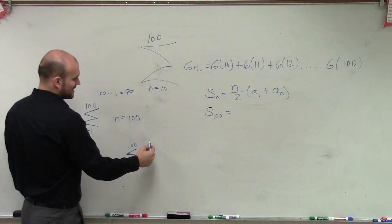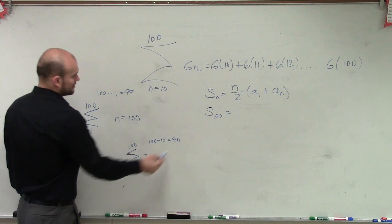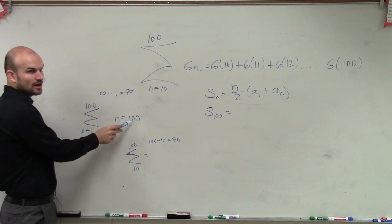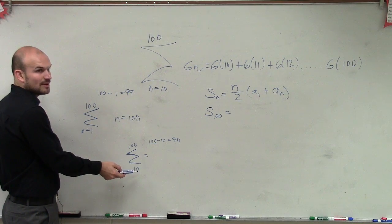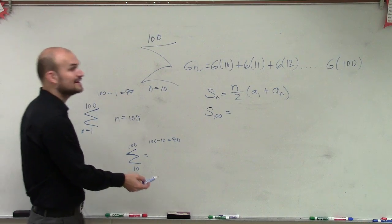So 100 minus 10 would equal 90. But our answer is not 99. Our answer, our n, total number is 100. So it's not 100 minus 10, but it's actually going to be an extra term on that, which will be 91.